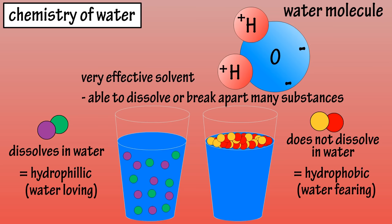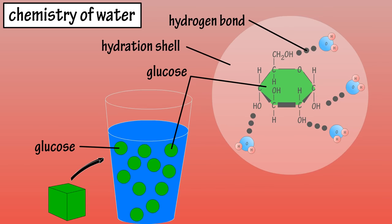Some substances, such as glucose molecules, dissolve and remain intact in water. As water molecules surround the substance, forming a hydration shell around the molecule.